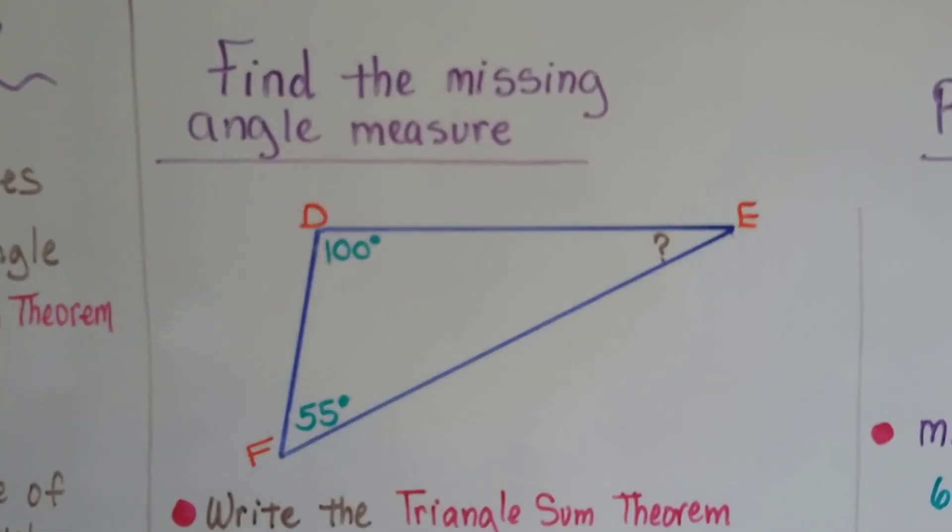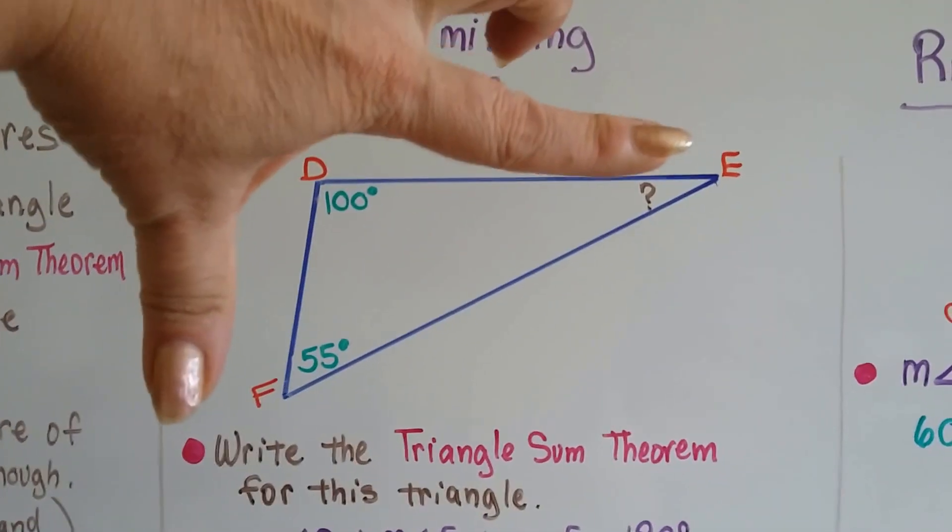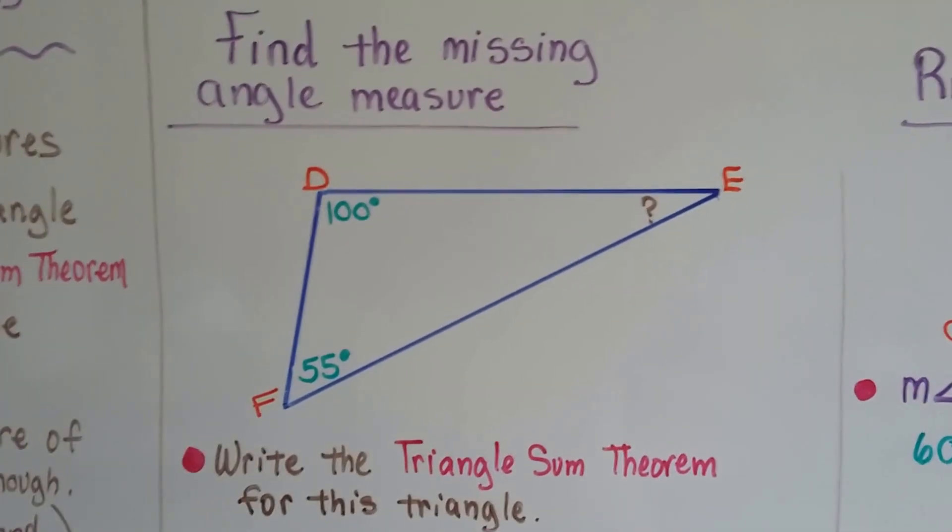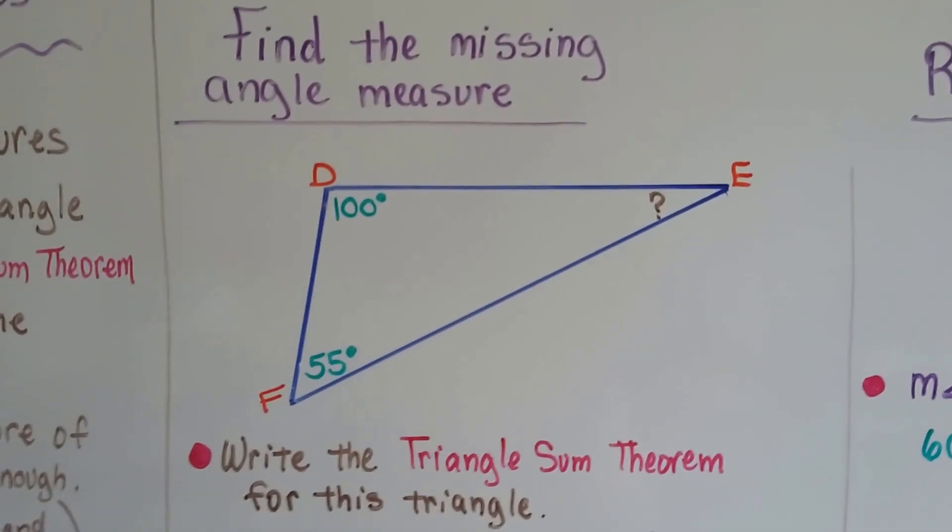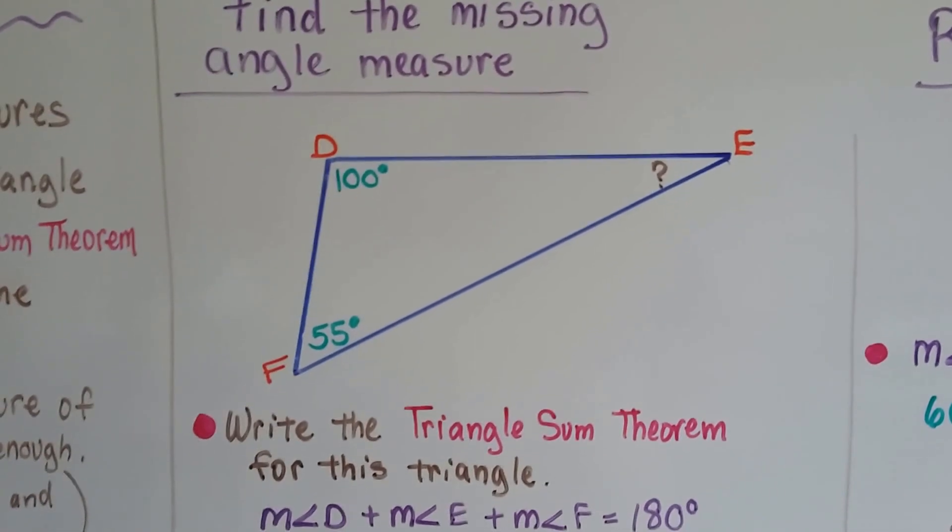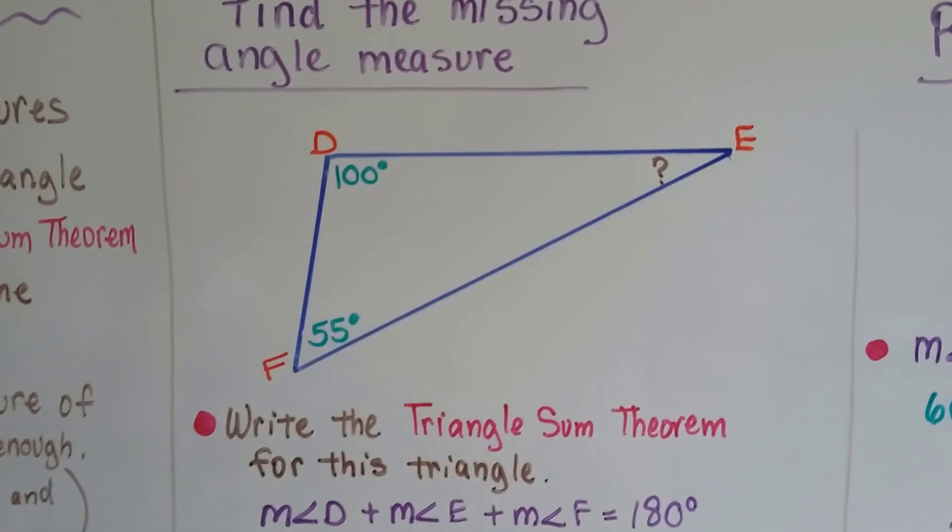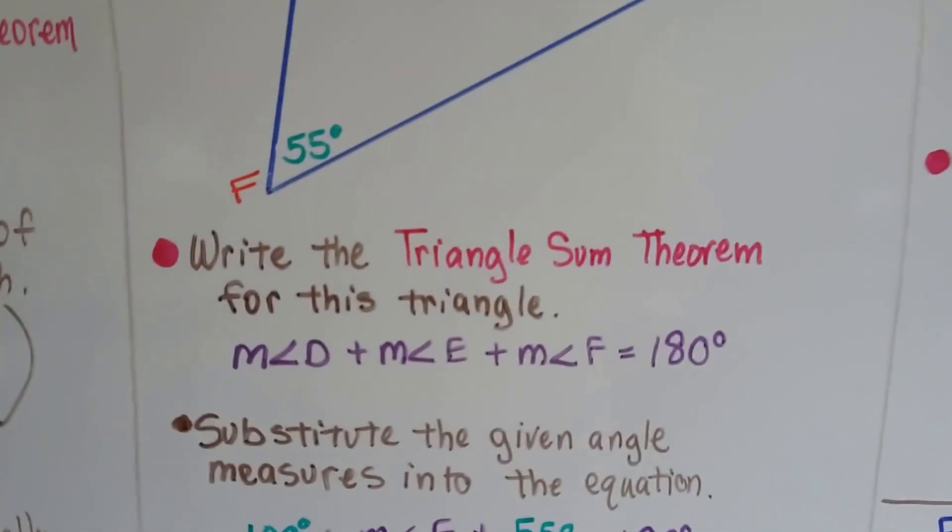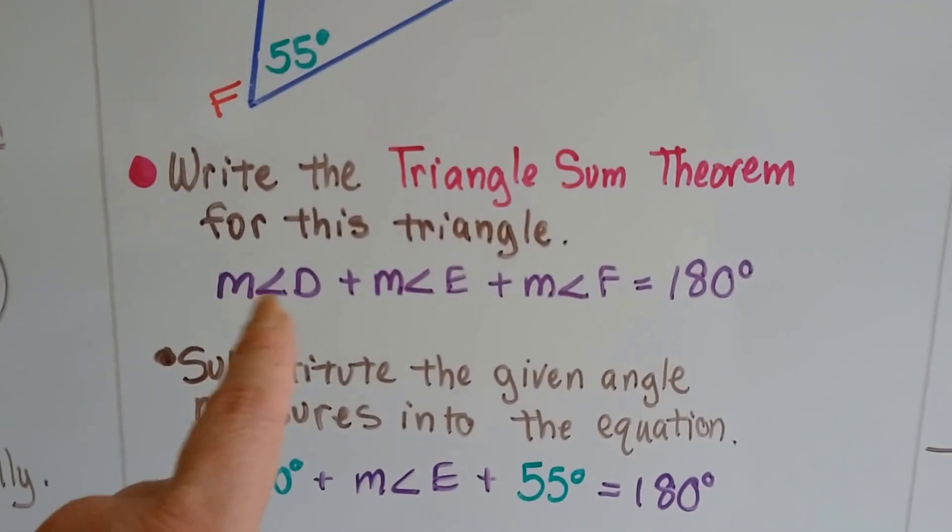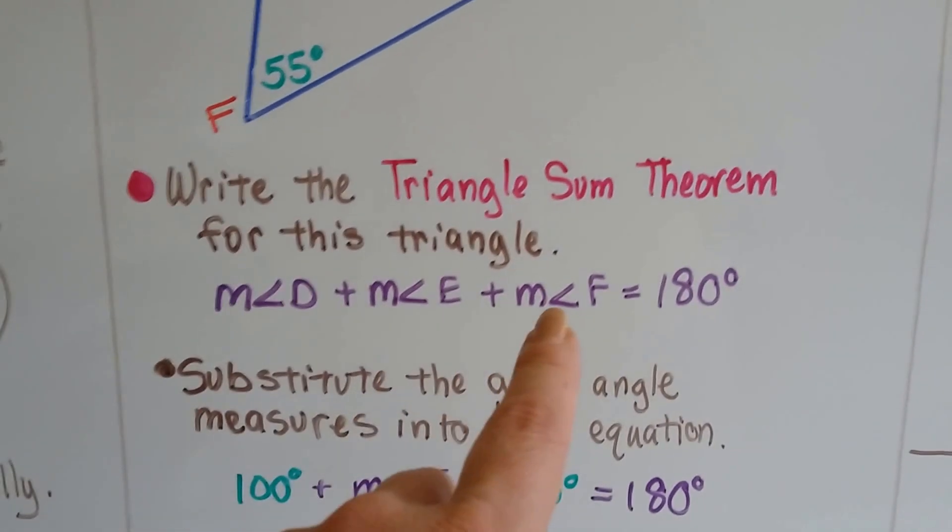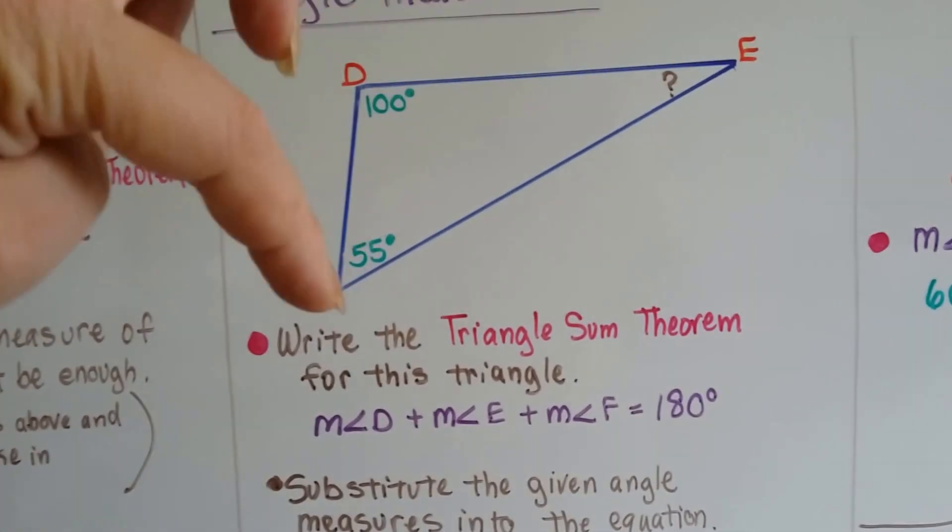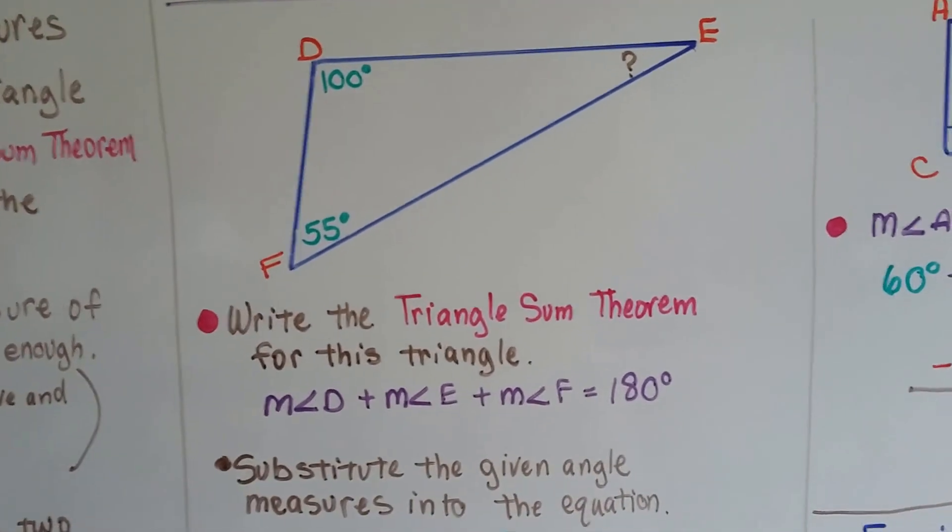Let's take a look at this. This is a regular obtuse type of triangle. This angle right here is obtuse, it's bigger than 90 degrees. If we need to find the missing angle measure, and we have two of the measures—100 degrees for angle D and 55 degrees for angle F—we write the Triangle Sum Theorem for this triangle. The measure of angle D plus the measure of angle E plus the measure of angle F is 180 degrees.